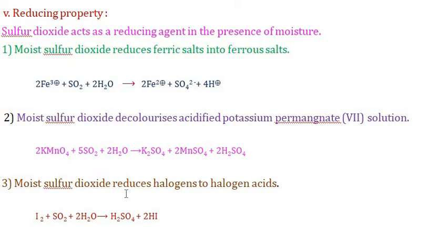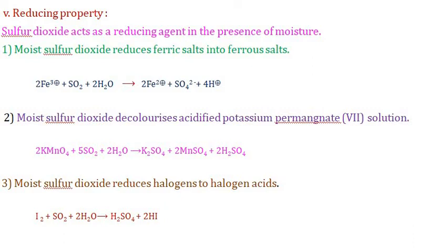Moist sulfur dioxide also reduces halogens to halogen acids. For example, iodine reacts with SO2 and water to form sulfuric acid and HI. In this reaction, iodine is reduced from oxidation state 0 (elemental I2) to −1 (in HI). These are the five chemical properties of SO2, with the fifth being the most important.